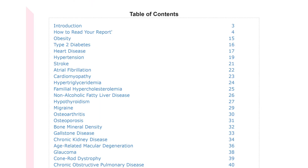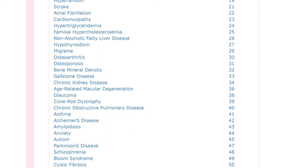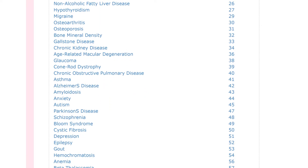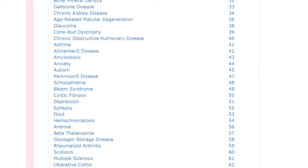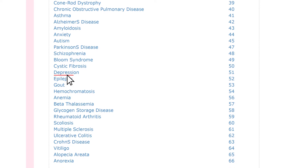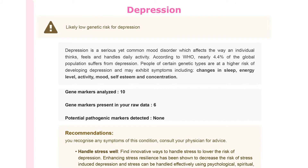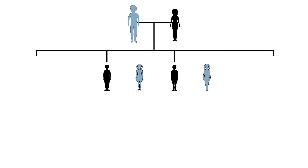The table of contents lists all the health conditions covered in your report. You can click on any entry from the list to learn more. Certain diseases like diabetes run in families.